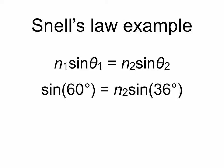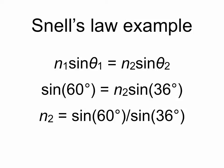So we have simplified the sine of 60 degrees equals n2 times the sine of 36 degrees. Now we can solve for n2 as being the sine of 60 degrees divided by the sine of 36 degrees, which is a number that comes out to be 1.47.